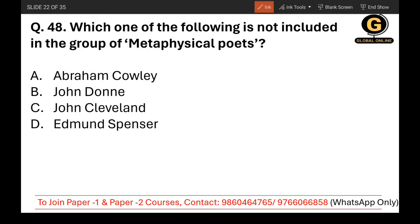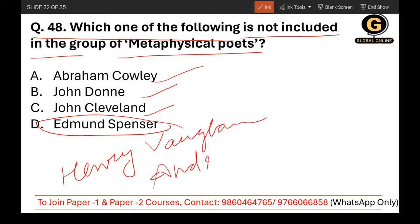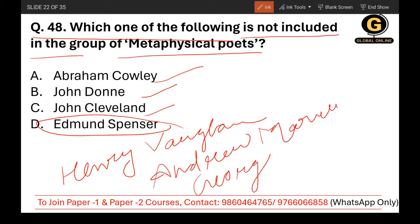Question 48: Which one of the following is not included in the group of metaphysical poets? Abraham Cowley, John Donne, and John Cleveland are all metaphysical poets. Edmund Spenser is not a metaphysical poet — that is the correct answer. Other metaphysical poets include Henry Vaughan, Andrew Marvell, George Herbert, and Richard Crashaw.